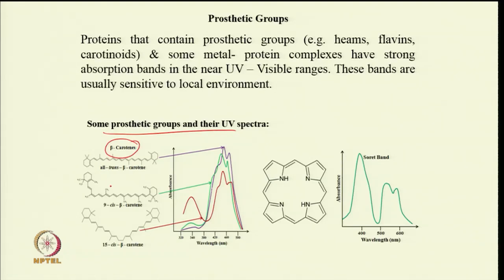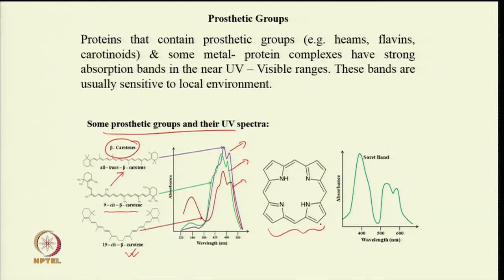Beta-carotene can be in three different forms. All-trans beta-carotene gives one kind of spectrum, 9-cis beta-carotene gives a different green spectrum, and 15-cis beta-carotene gives a red spectrum. Just by looking at the spectra, you can differentiate between different types of carotene. Heme is a very important prosthetic group present in certain proteins, and those proteins can be characterized by looking at the absorption of the heme group. Particularly, the Soret band is quite useful and can tell you about the environment around the heme group.